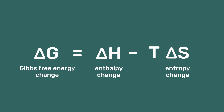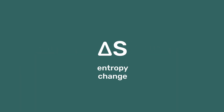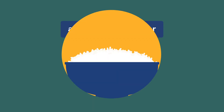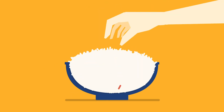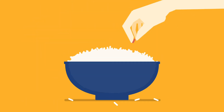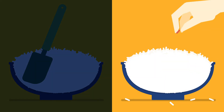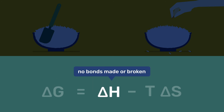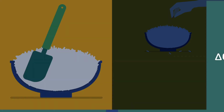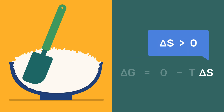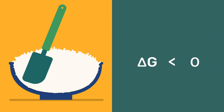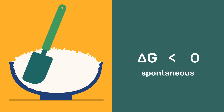The last thermodynamic property we introduce is entropy. In its simplest sense, it can be understood as a measure of disorder. To understand this, imagine a large bowl of white rice. It is very easy to add a colored grain and mix it in. However, it is much more difficult to remove it afterwards. Mixing the grain in or taking it out does not involve enthalpy changes because there is no making or breaking of bonds. Delta H is therefore zero. However, mixing in the grain increases disorder, so the entropy increases. This means that delta S is positive and delta G negative, making it a spontaneous and therefore effortless process.